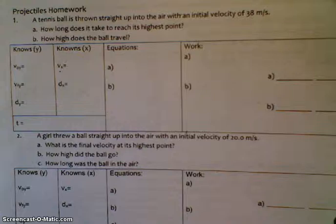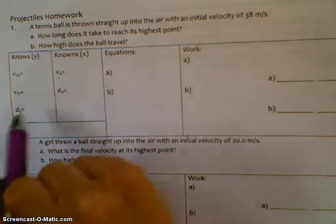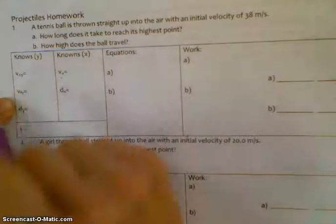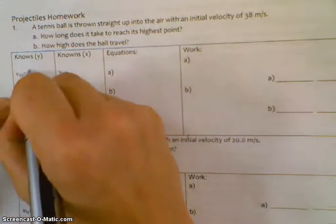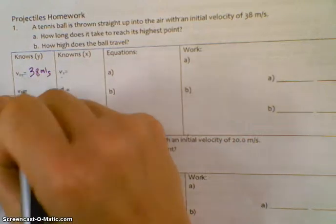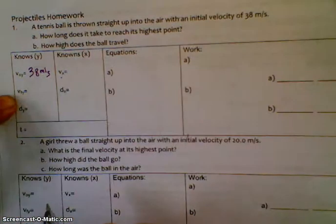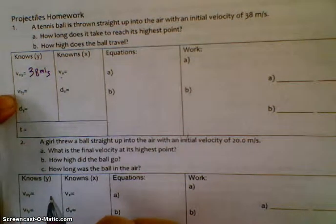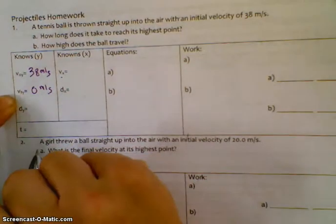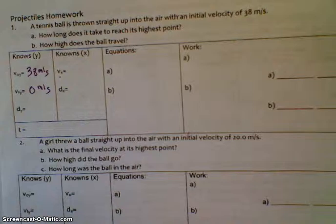For number one, a tennis ball is thrown straight up into the air with an initial velocity of 38 meters per second. We know immediately that this is our initial velocity, so we have vi equals 38 meters per second. Since this is a straight up down projectile, automatically what does that tell us our final velocity is? Zero, excellent, zero meters per second. What equation will we use with this problem?